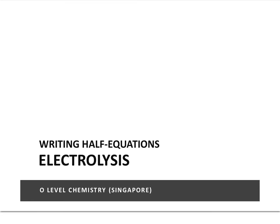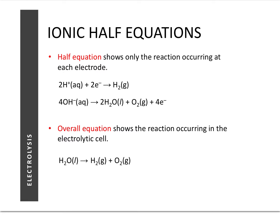This video is an extension to the series of electrolysis videos. In electrolysis, we learn that when we pass a current into an electrolyte, some ions are discharged at the anode and some at the cathode. In this video we're going to focus on how to write the equations for the discharge of ions at each electrode. A half equation only shows the reaction happening at each electrode — the oxidation reaction at the anode and the reduction reaction at the cathode.